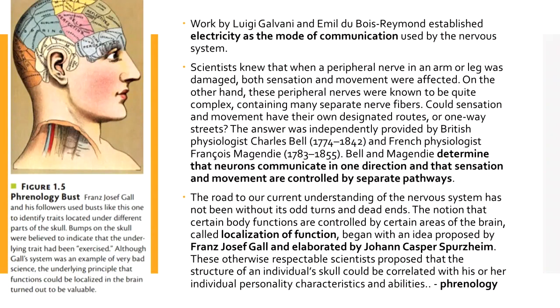Galvani and Du Bois-Reymond established that electricity is the mode of communication used by the nervous system. Bell and Magendie determined that neurons communicate in one direction and that sensation and movement are controlled by separate pathways.